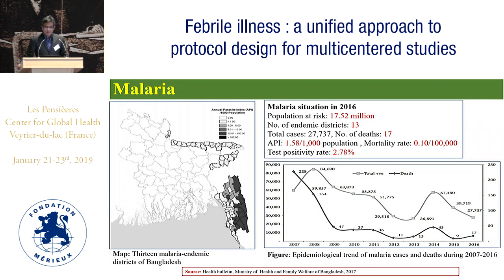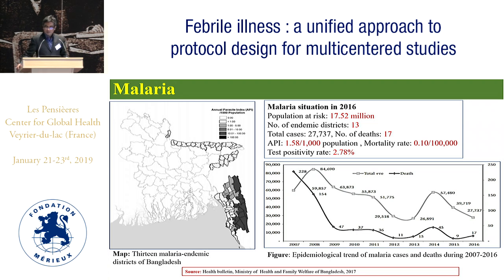Regarding malaria, 13 out of 64 districts are endemic, and 17.5 million people are at risk. In 2016, there were almost 28,000 cases with 17 deaths. The annual parasite index was 1.58 per 1,000 population, and the mortality rate was 0.1 per 100,000 population. This study covered the years 2007 to 2016.